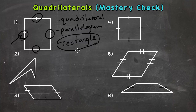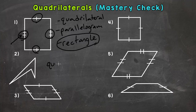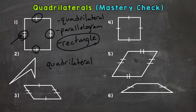Alright, welcome back. Hopefully we're good — we did number one together, so we had five more quadrilaterals to classify. Let's start with number two. Number two is the most general, least specific quadrilateral there is, and the best name for it is just a quadrilateral. It doesn't have any parallel sides, doesn't have any right angles, and doesn't have any congruent sides — so just a quadrilateral.